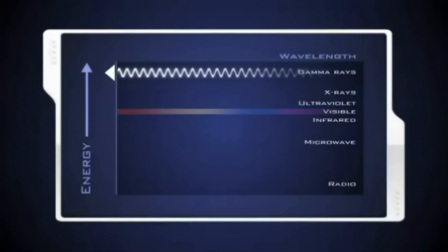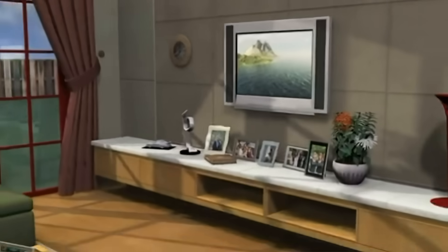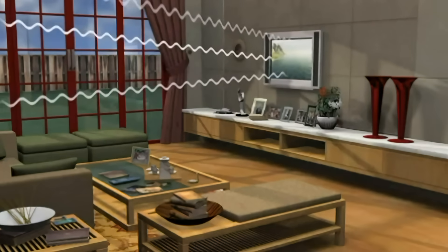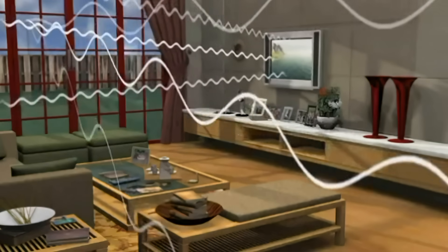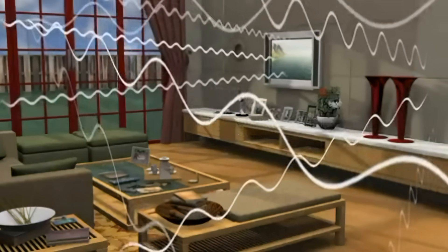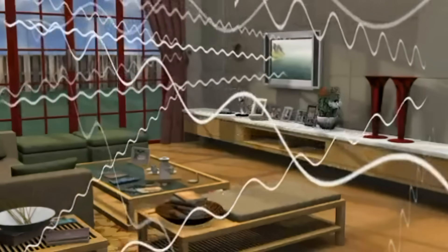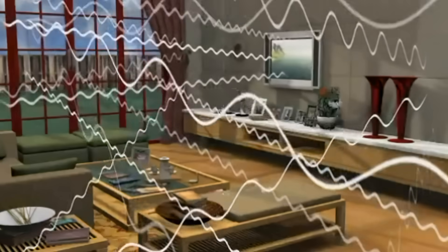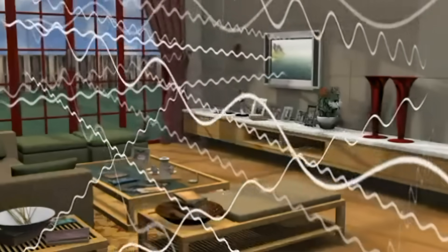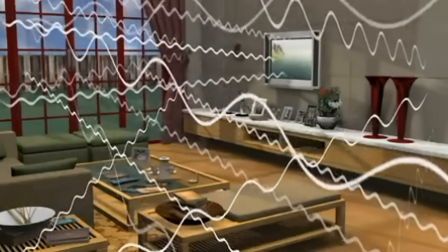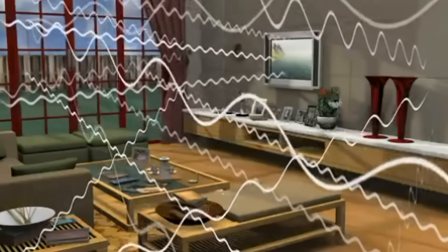So as you sit watching TV, not only are there visible light waves from the TV striking your eyes, but also radio waves transmitting from a nearby station and microwaves carrying cell phone calls and text messages, and waves from your neighbor's Wi-Fi and GPS units in the cars driving by. There is a chaos of waves from all across the spectrum passing through your room right now.